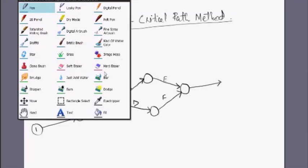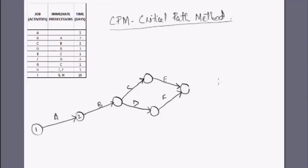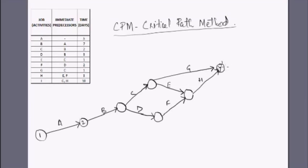We can merge G and H as well, ending at one node. Finally we have the last job, activity I, ending at the last node. Let me give the numbering: one, two, three, four, five, six, seven, and eight.